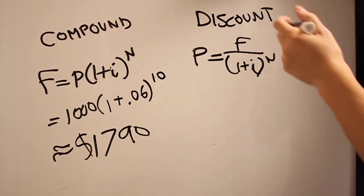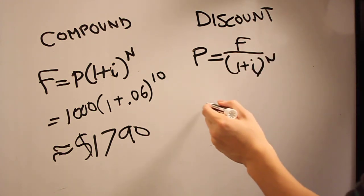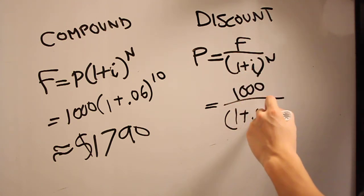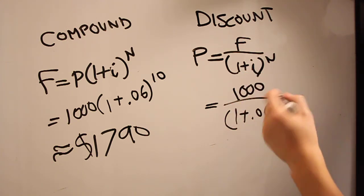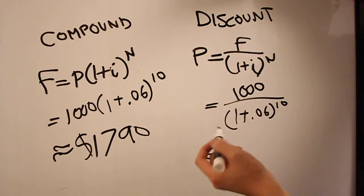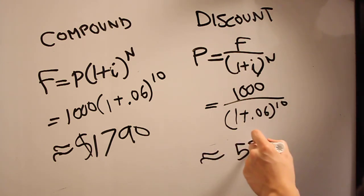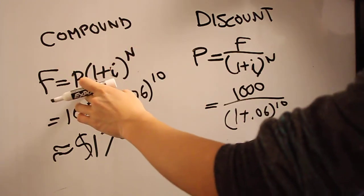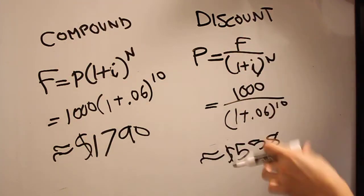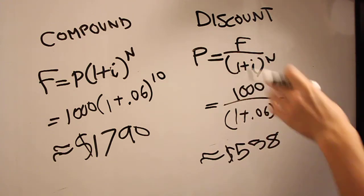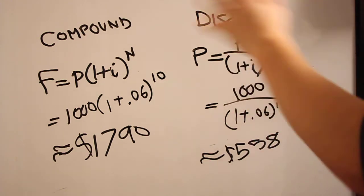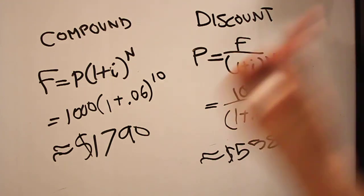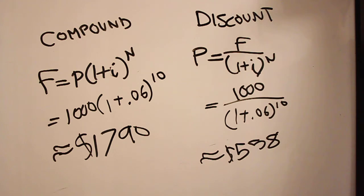Now for discounted, we want $1,000 in 10 years. So how do we write that? $1,000 at the top. 1 plus .06 to the 10th power. That's going to be about $558. So you understand why these are different. Here you put in $1,000, you compounded it and got more. Here you put in a smaller amount to get to $1,000. And these are just different strategies depending on what you as a company or as an individual wants to get out of the whole interest scheme.